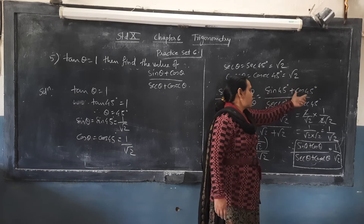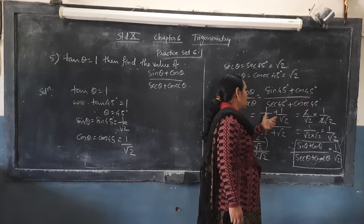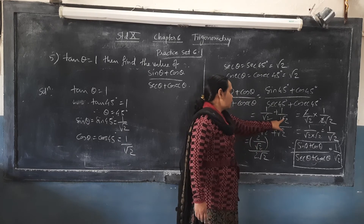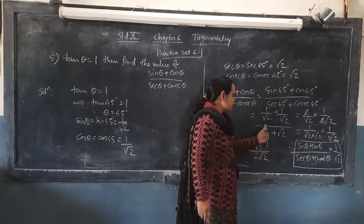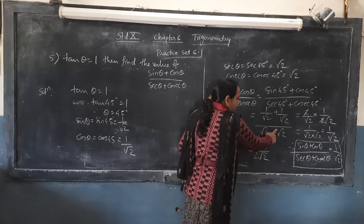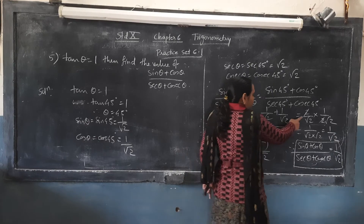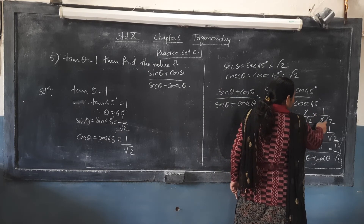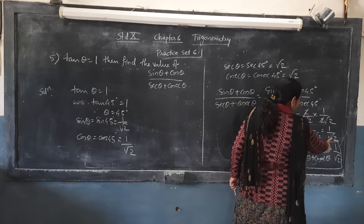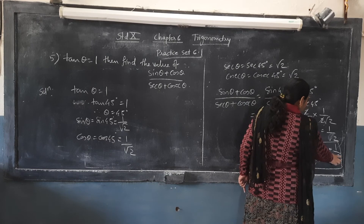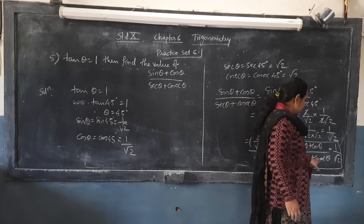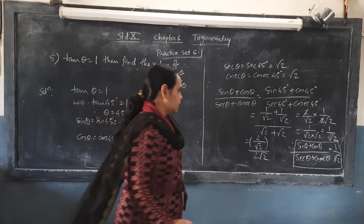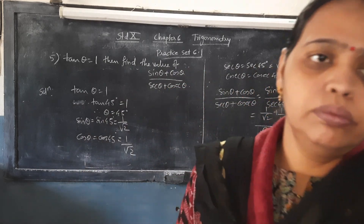We substitute sin 45°, cos 45°, sec 45°, and cosec 45° into the expression. The numerator: 1/√2 plus 1/√2 equals 2/√2. The denominator: √2 plus √2 equals 2√2. So we have (2/√2) upon (2√2). The 2s cancel, and √2 times √2 equals 2, giving 1 upon 2. Therefore the value of (sin θ + cos θ) upon (sec θ + cosec θ) equals 1/2.